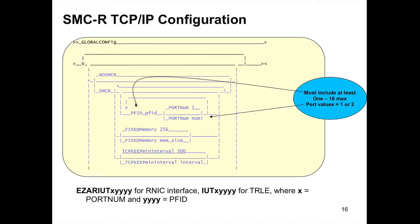If you code SMCR and want to use it, you need to configure at least one PFID. That PFID matches what you defined in HCD. We default to port number one, but you can use port one or port two — one or the other, not both for the same PFID. Optional parameters: FIXEDMEM — the default is 256 MB, but you can go up to 9,999 MB. That's the storage reserved for the fixed RMB buffers registered for the other stack to use, and also used for the outbound staging buffer. Because this is fixed storage, you can cap it.